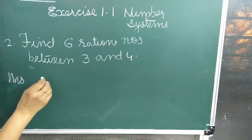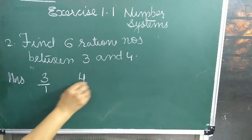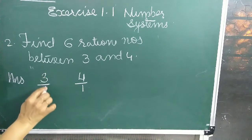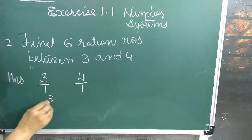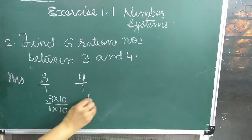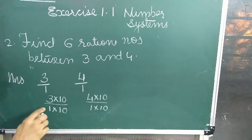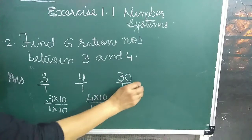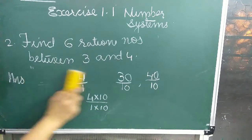Answer: 3 can be written as 3 upon 1 and 4 as 4 upon 1. Now multiply both numerator and denominator by 10, so we can write it as 3 into 10 upon 1 into 10, and 4 into 10 upon 1 into 10. The numbers become 30 upon 10 and 40 upon 10.